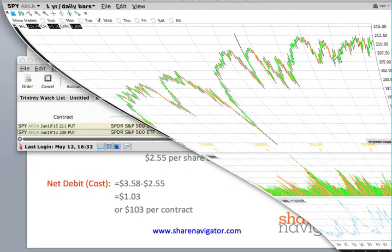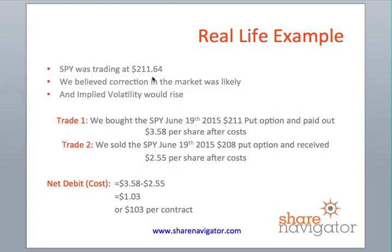The shares were trading at $211.64 and we believed a correction was likely. We paid $358 for the $211 put option and received $255 from selling the $208 put. When you combine these two trades, the net effect is still bearish. The net cost to place this trade was $358 minus $255, which equals $1.03 per share, or $103 per contract.